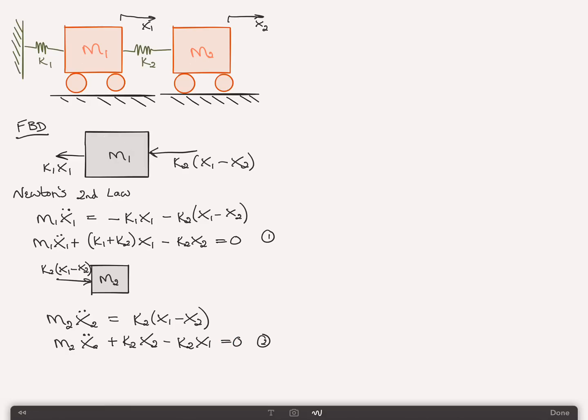I can combine these using matrix notation as M1, 0, 0, M2 times X1 double dot, X2 double dot, plus K1 plus K2, minus K2, minus K2, K2 times the X vector X1, X2 equals zero. We'll call that equation three.